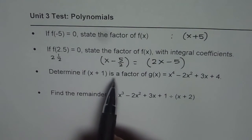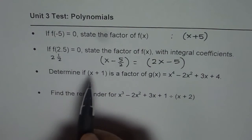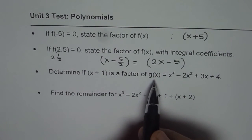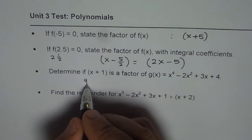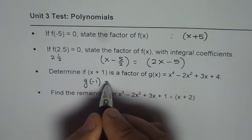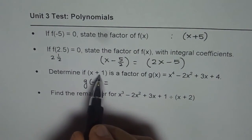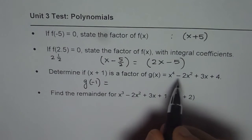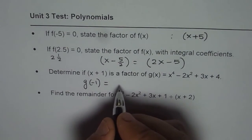The next one is, determine if (x + 1) is a factor of g(x). It is going to be a factor of g(x) if g of minus 1 is 0. So we have to replace x with minus 1 and check it out.